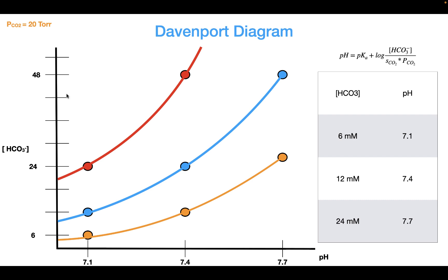So these three curves show the bicarbonate buffer system for a number of different partial pressures of CO2. Now we're going to look at the non-bicarbonate buffers, which can be shown with this line. It is at the intersection between these two lines — let's say the red line and the green line — which would show the pH of the solution. It's the combination of these two lines together that is the Davenport diagram.